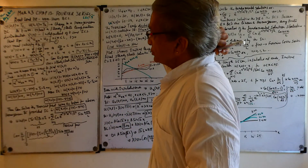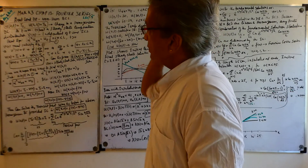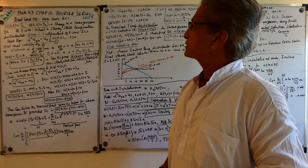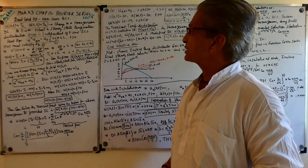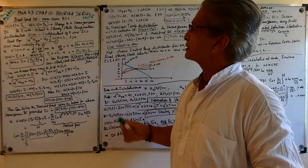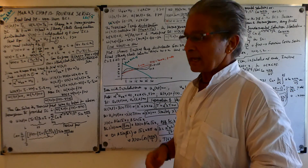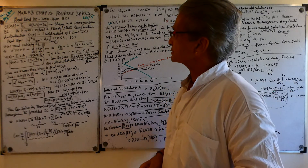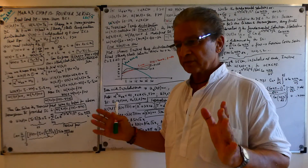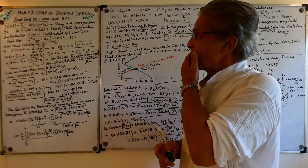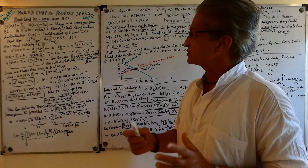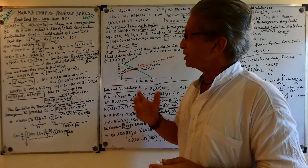Good morning. Today is Tuesday, August 3rd, 2021. This is a continuation of Math K3, Chapter 13. We were doing Fourier series, and last time I did the heat conduction problem — we had a one-dimensional rod where the two ends were maintained at zero degrees centigrade, so we had homogeneous boundary conditions.